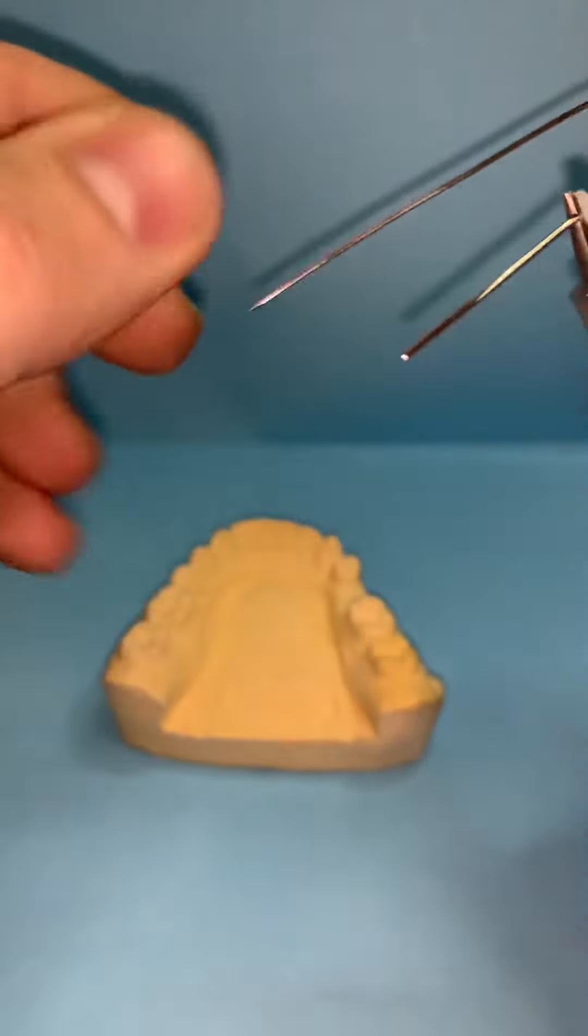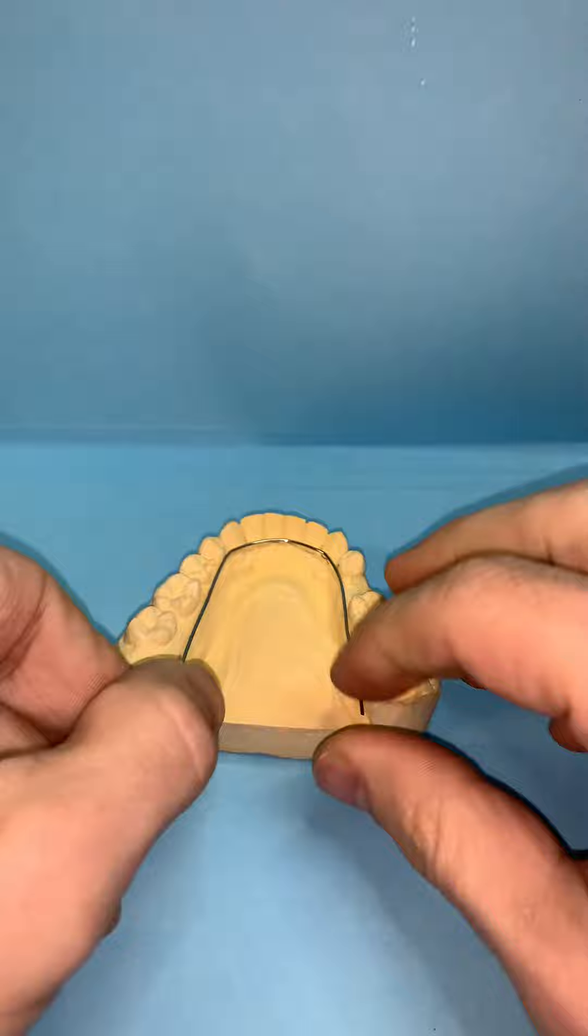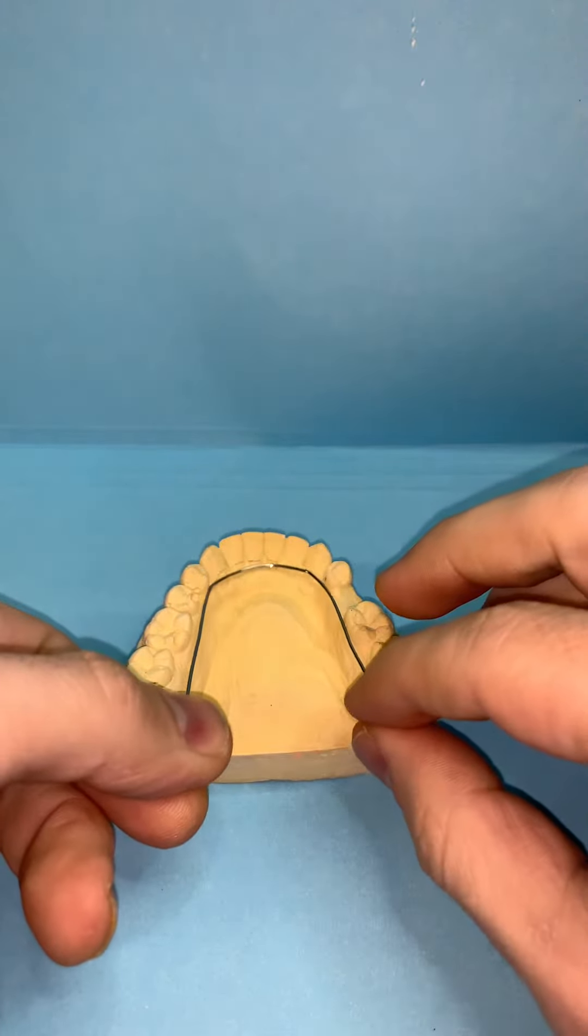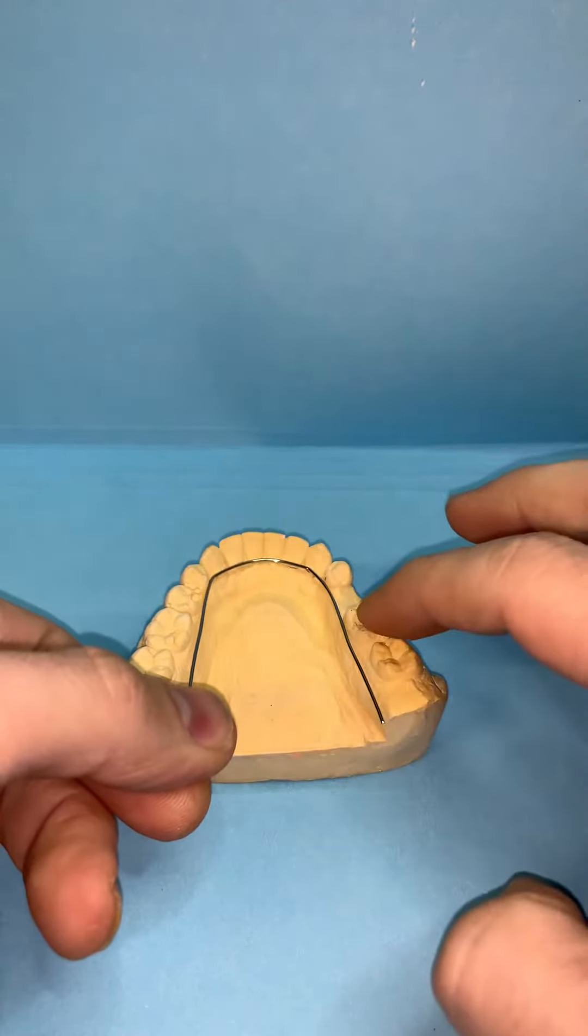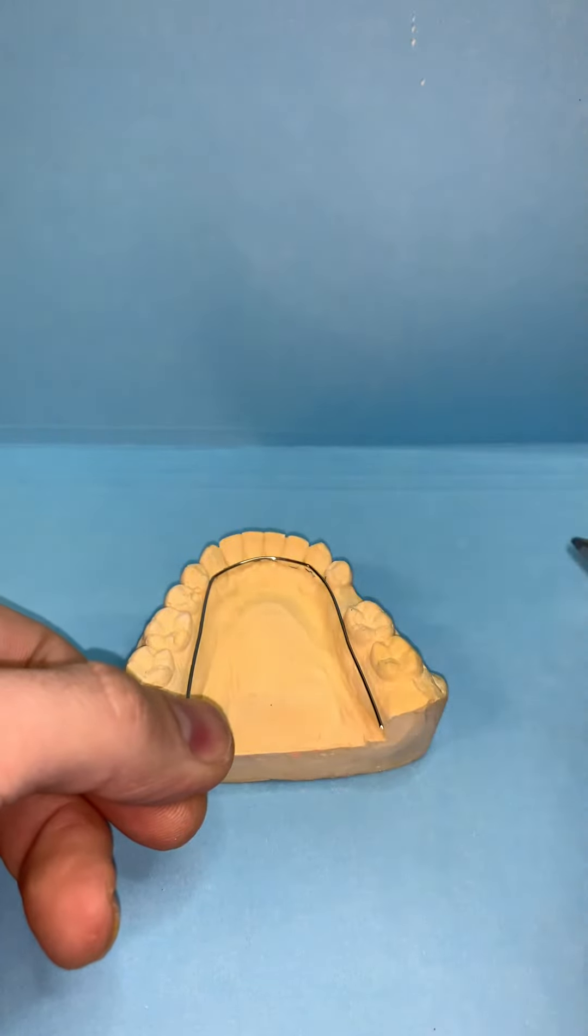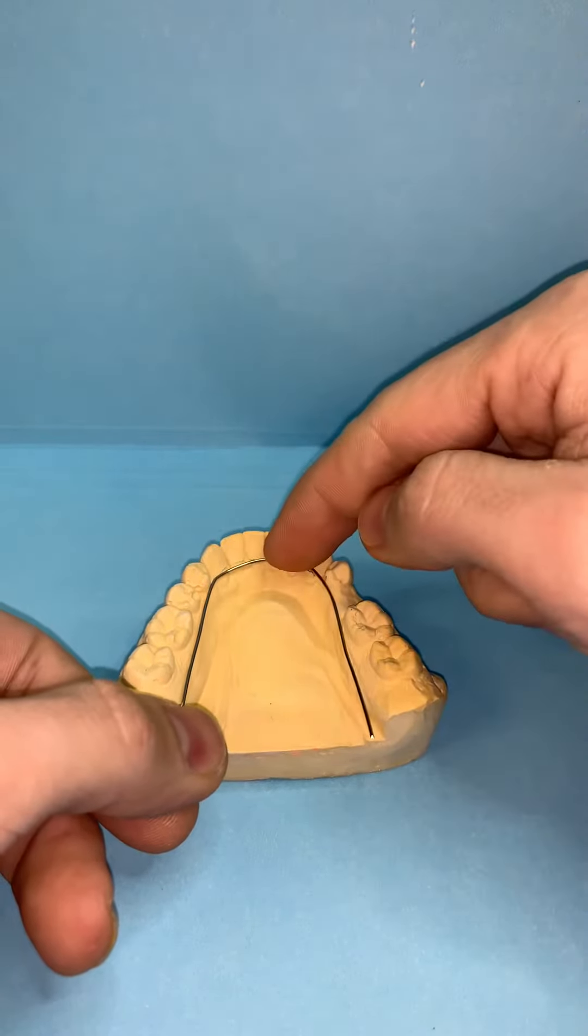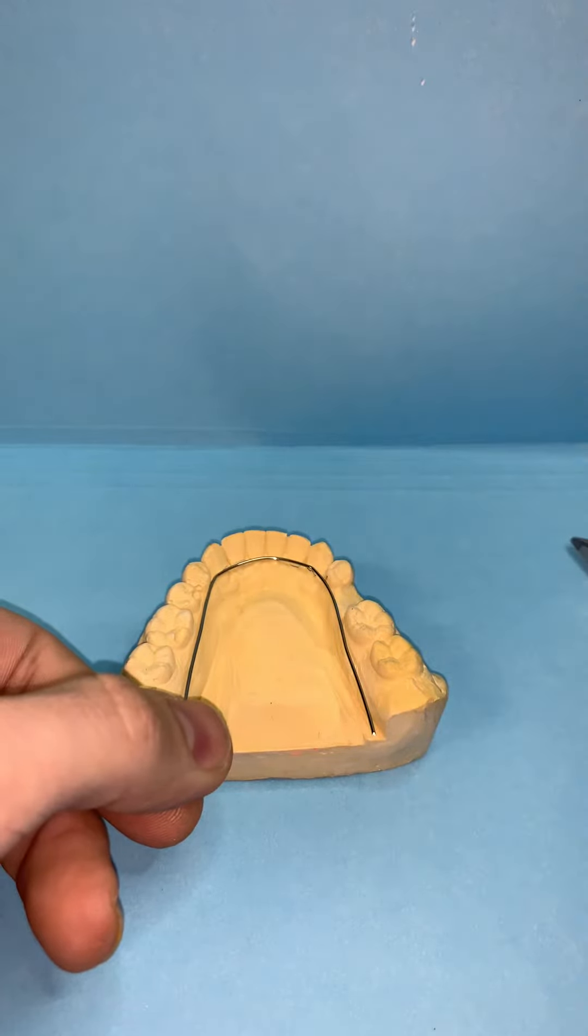And then you want it to finish into the middle of the band. So when the teeth are banded, we will fit it in the middle of the molars, band it, and then solder it. Very simply, that is your lower lingual holding arch.